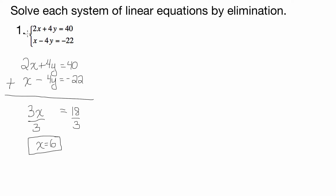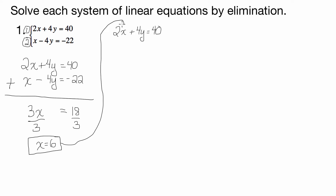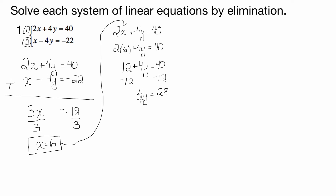To solve for y, I need to plug in 6 for x into either one of these two equations. Let's call this equation 1 and equation 2. It doesn't matter which one you use, so I would do whichever is easier. I personally would rather not use negative numbers, so I'm going to use equation 1: 2x plus 4y equals 40. So 2 times 6 plus 4y equals 40, which gives 12 plus 4y equals 40. Subtract 12 from both sides, so 4y equals 28. Divide both sides by 4.